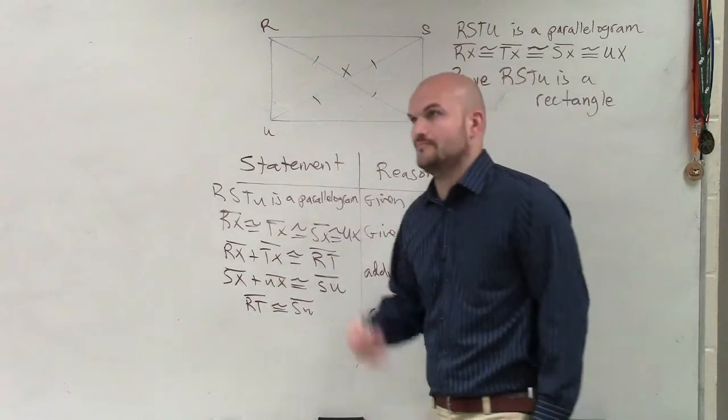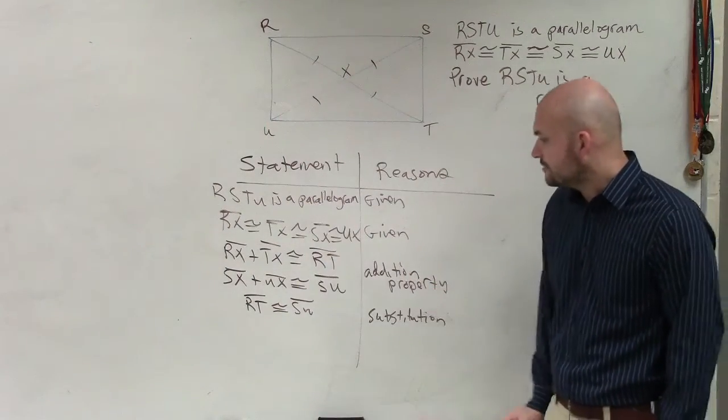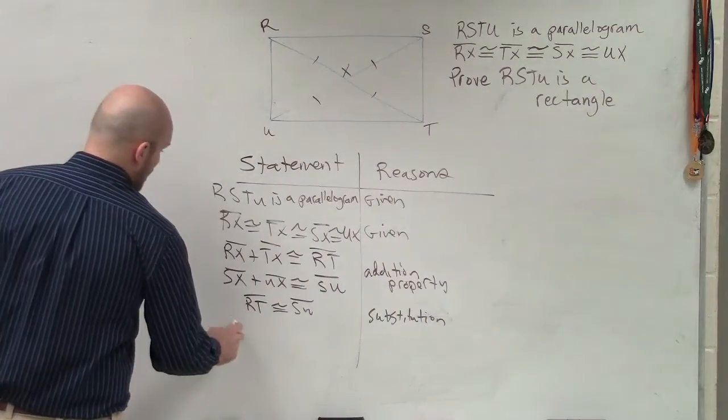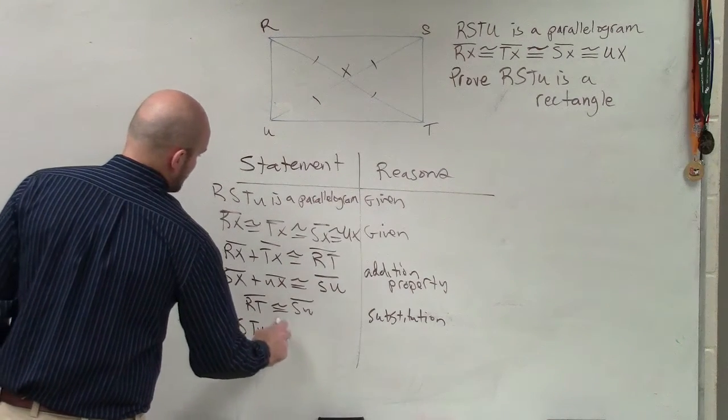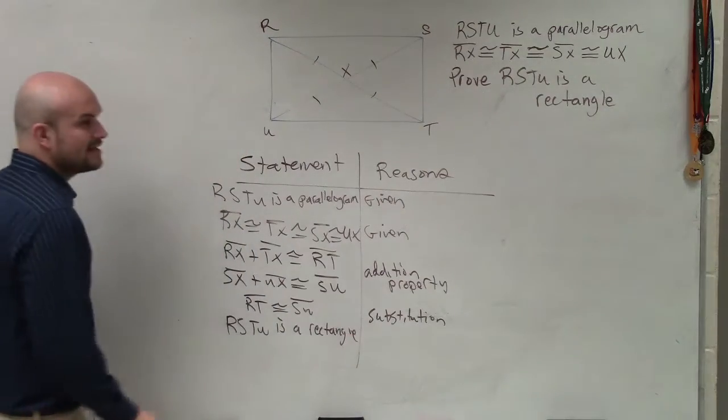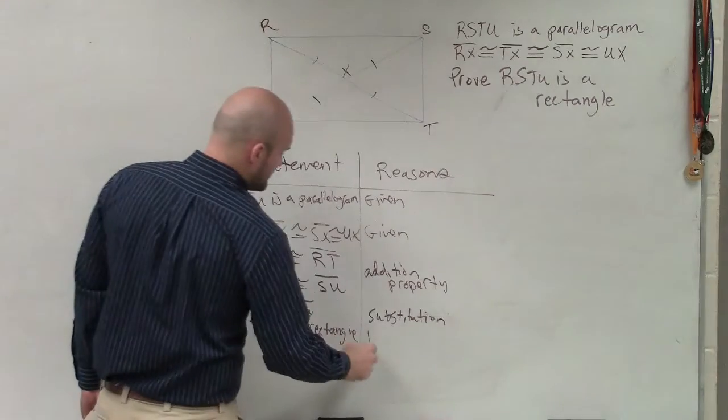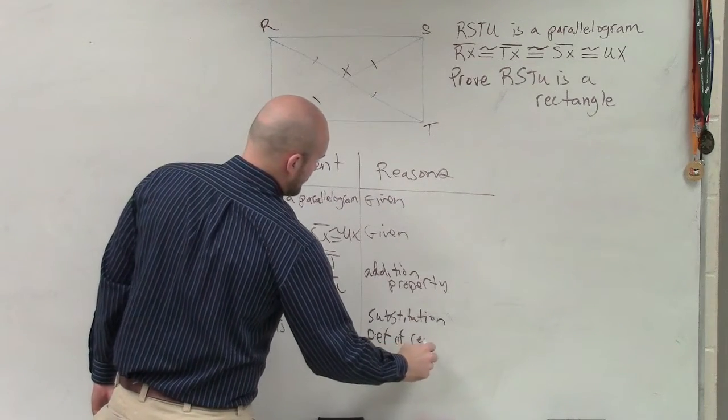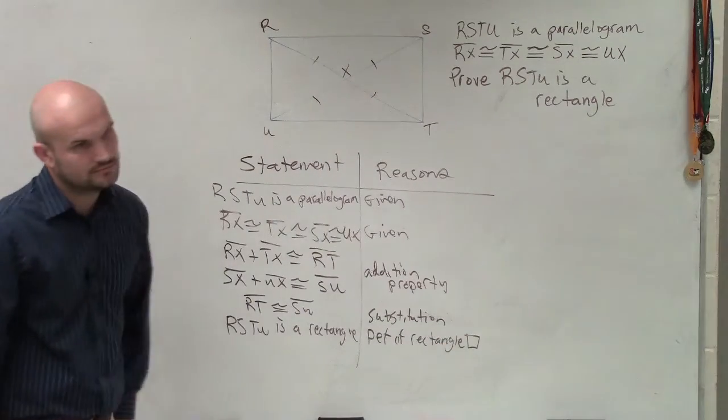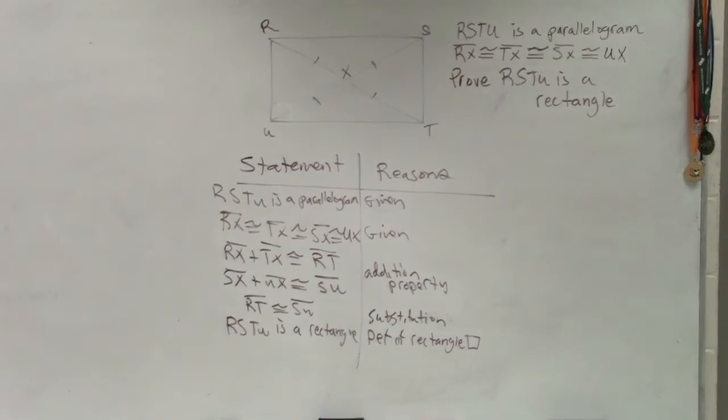And again, remember especially on a multiple choice, you'll have options of different properties you can use. And then the last thing is, now I can say that RSTU is a rectangle. Well, why is it a rectangle? Well, because your diagonals are equal to each other, which is part of the definition of a rectangle. And there you go. Now I just did your proof for you. Isn't that so nice? Yes. Done like every proof.